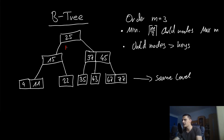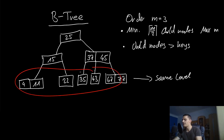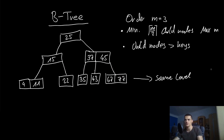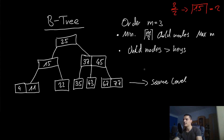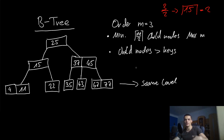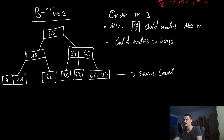At the same time, each node must have at least ceiling(m/2) child nodes as a minimum — except for the root node. The root node must have a minimum of two children, but all other non-leaf nodes must have at least ceiling(m/2) children. In this case, ceiling(3/2) = ceiling(1.5) = 2, so a minimum of two child nodes. If we're below the minimum or above the maximum, we have to rebalance the tree. Also, the number of child nodes must always be one more than the number of keys: two keys means three children, one key means two children.